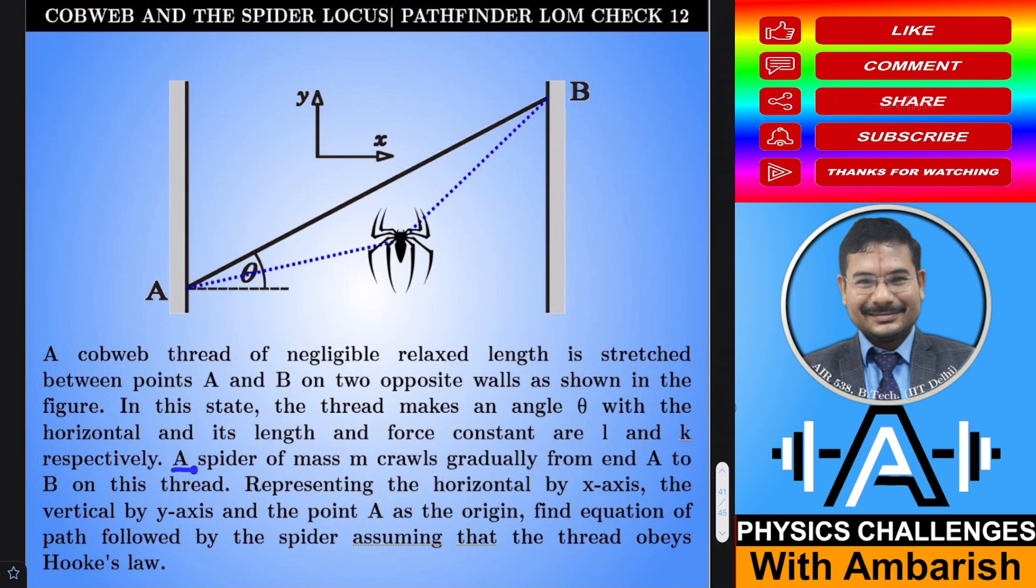A spider of mass M crawls gradually from end A to B on this thread. Because of the MG of the spider, this thread is going to sag downwards like this. Maybe somewhere here the spider is at some general time. Representing the horizontal by x-axis and the vertical by y-axis and the point A as the origin,